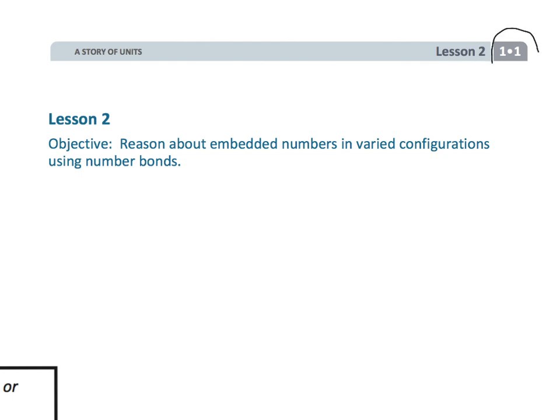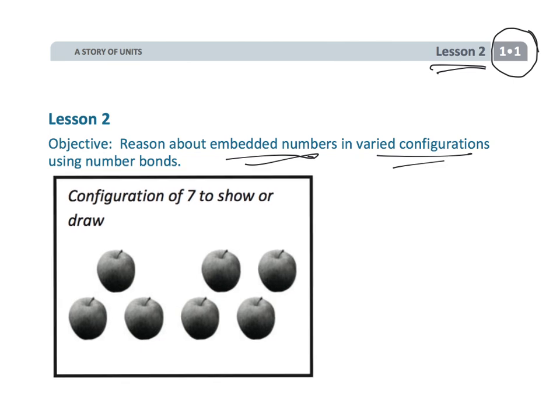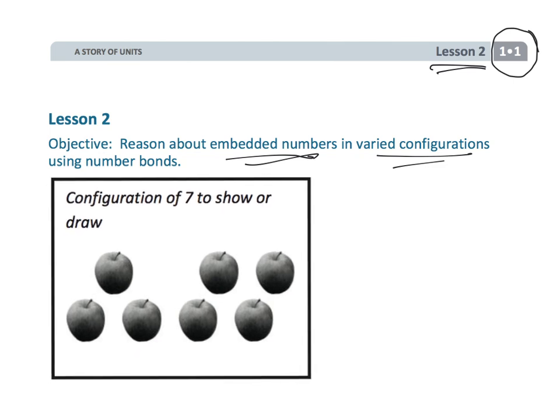Alright, this is Grade 1, Module 1, Lesson 2. In this lesson, we're going to reason about embedded numbers in various configurations. So the idea is we're not just going to give students tidy little numbers. We're going to give them collections of oddly arranged things.